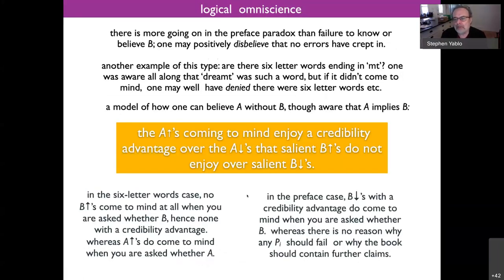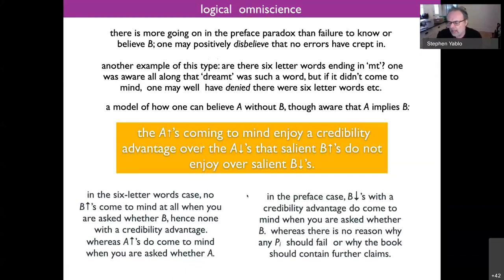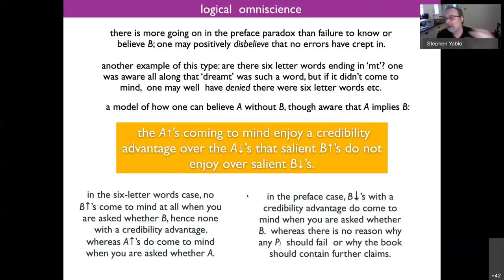I'm less on top of the subject matter of B than of A — I'm better defended against the old false-makers than against the new ones. There's more going on in the preface paradox than failure to know: I may positively disbelieve that no errors have crept in. This gets us closer to the problem of logical omniscience, which I want to understand not just as making excuses for bad logical behavior, but making rational sense of cases where our beliefs don't hang logically together. That's not intrinsically different from having desires in conflict — you just have to work out which belief to hold on to.